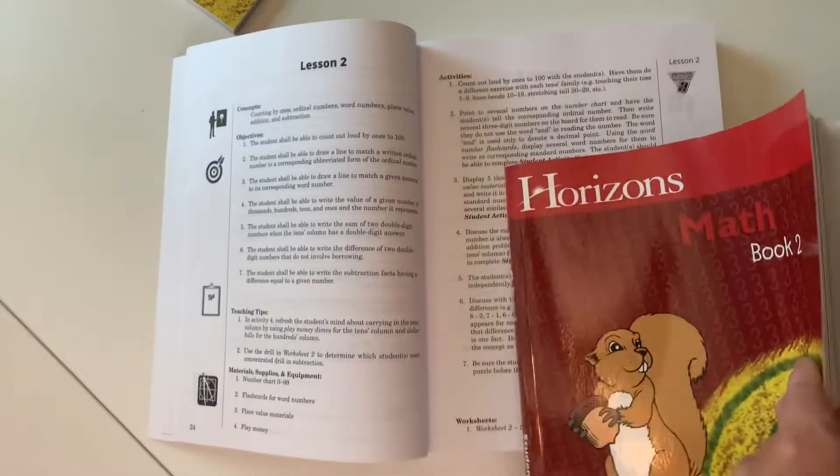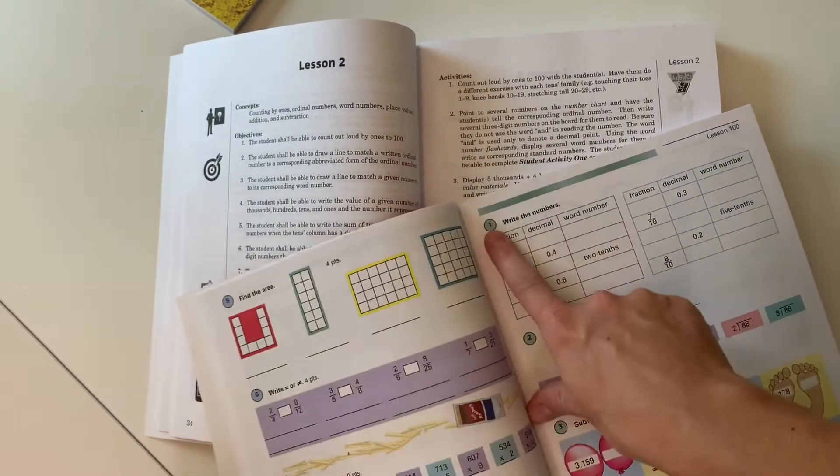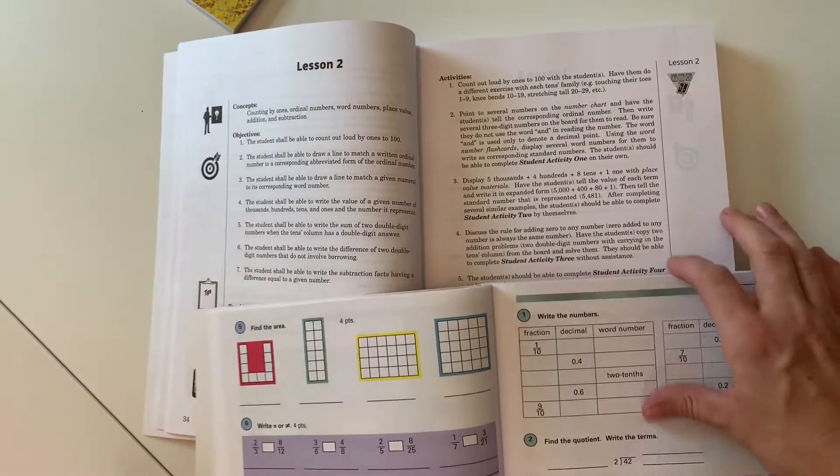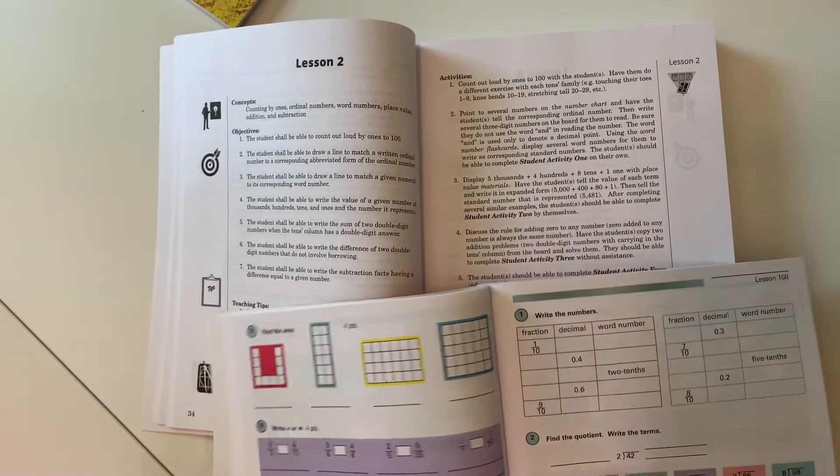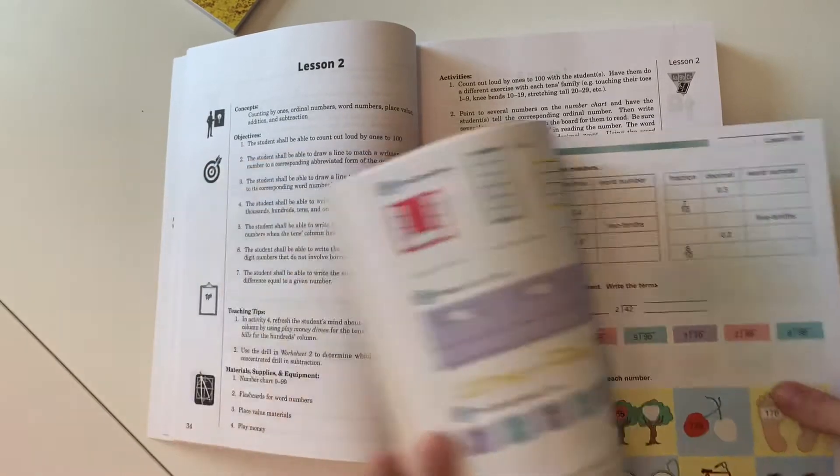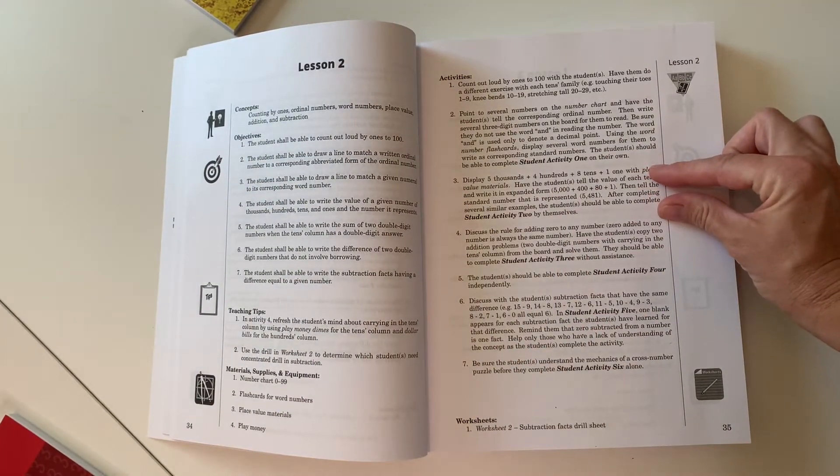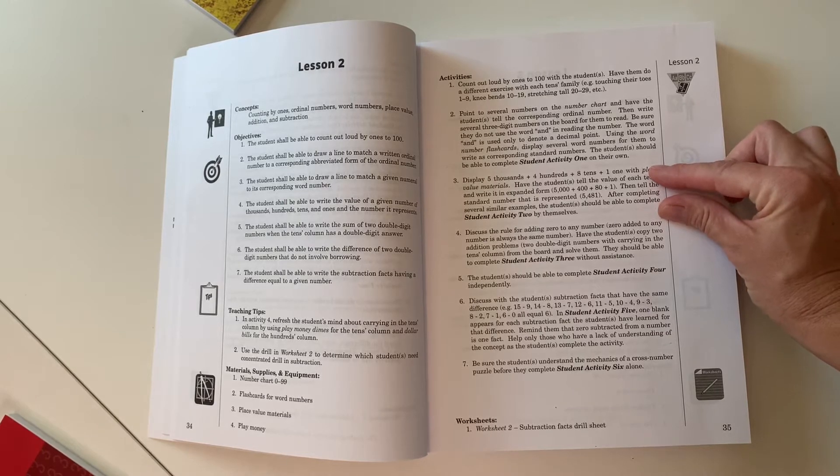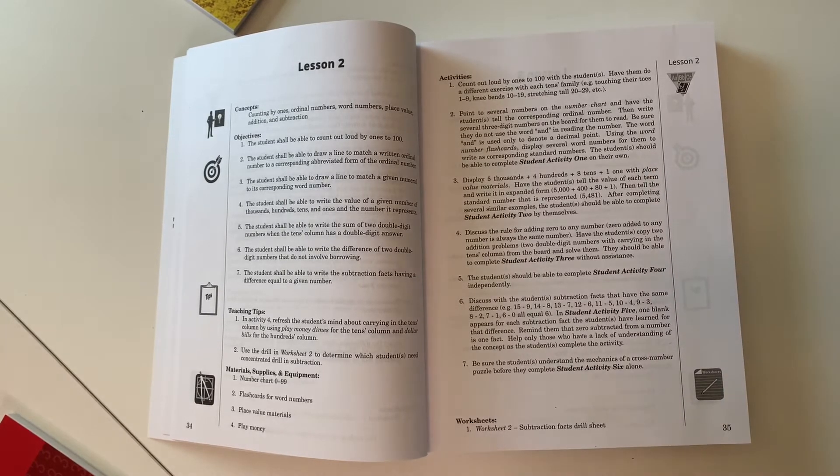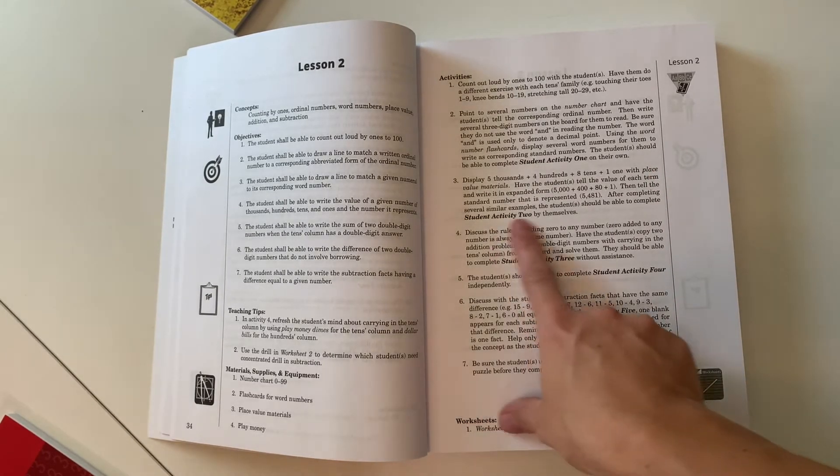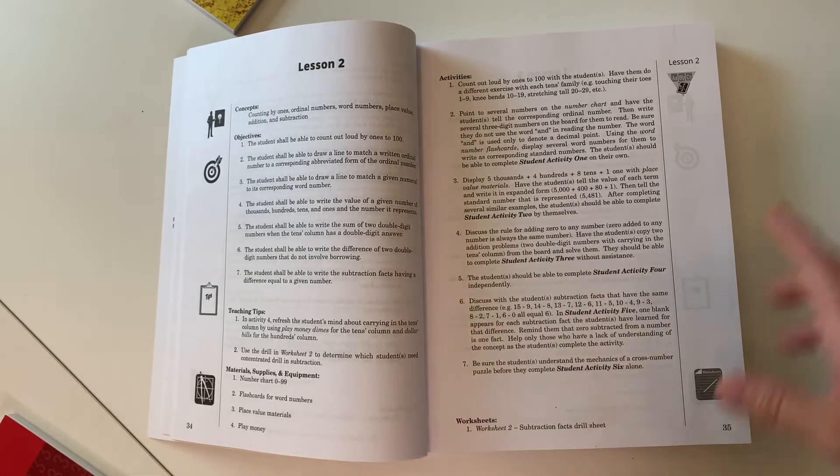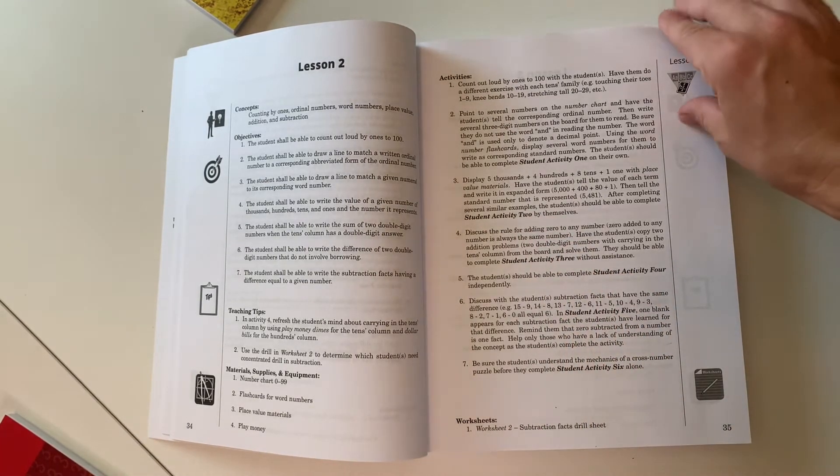And then you'll notice that in the teacher guide, it says student activity one. That is referring to, if you look at a lesson right here, number one. And then student activity two would be number two. And it will give you just a brief explanation on how to introduce it to your child. And it will tell you if they should do it by themselves or with assistance or with help.